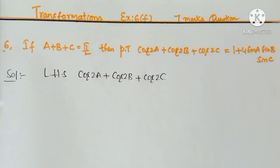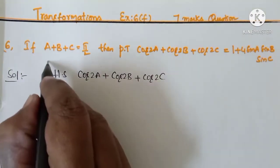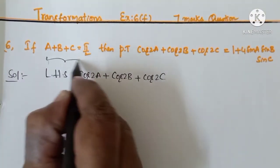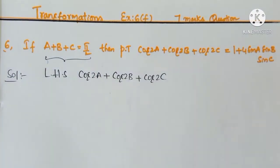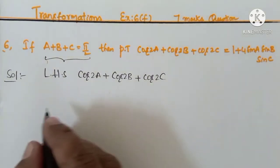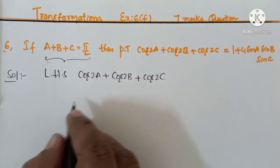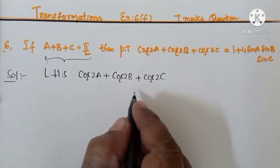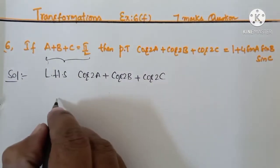In last classes we covered many questions with the condition A plus B plus C equal to 180 degrees. Now this condition is A plus B plus C equal to Pi by 2. We will prove that. First, we take LHS: Cos 2A plus Cos 2B plus Cos 2C.